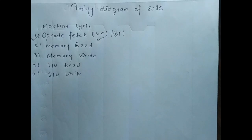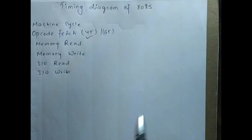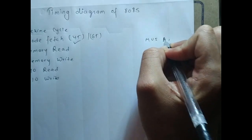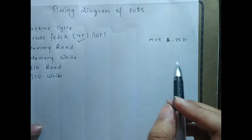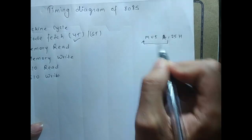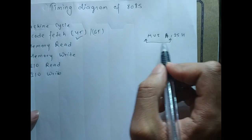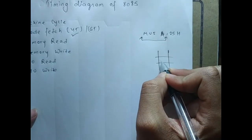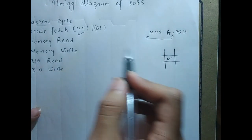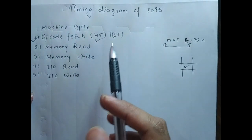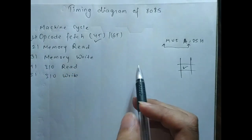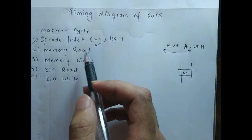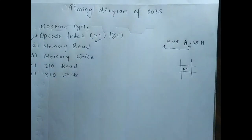The opcode fetch consists of 4 T-states and it is the first machine cycle of any instruction. For example, in an instruction like MVI B, 25H, this part is the opcode and this part is the operand. The opcode is present in a memory location, and you have to bring it. That machine cycle is called opcode fetch. In opcode fetch there are 4 T-states: in the first 3 T-states you will fetch the opcode, and in the fourth T-state you will decode it.